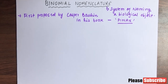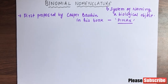Many books have stated that the binomial nomenclature system was proposed by Carolus Linnaeus. But we have written here Casper Bauhin, so you have to remember one thing: the binomial nomenclature system's principle was given by Casper Bauhin only.